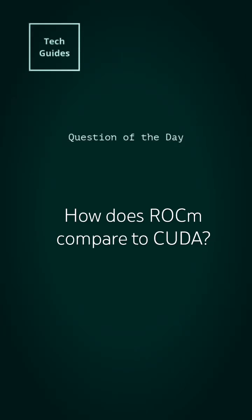How does ROCm compare to CUDA? Great question, welcome to the question of the day. ROCm is an acronym that stands for Radeon Open Compute, so think AMD when you see ROCm. CUDA stands for Compute Unified Device Architecture, and that one's for Nvidia graphics cards. Both are for GPU accelerated computing.